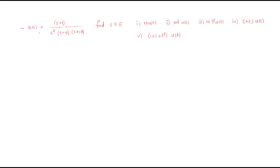The next problem has G(s) = 10(s+1) / [s²(s+4)(s+10)]. The inputs to evaluate are: 10·u(t), 10·t·u(t), 10·t²·u(t), and (1+t)·u(t). For the first input, r(t) = 10·u(t).